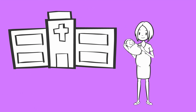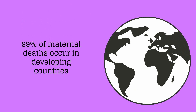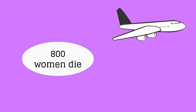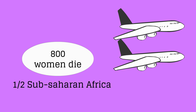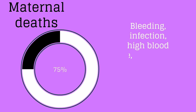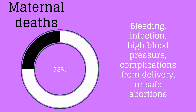Our journey through labor and delivery with Lavora has assumed a high-resource setting. In low-resource settings, there are a multitude of risks, and 99% of maternal deaths occur in developing countries. Every day, 800 women die from preventable causes related to pregnancy and childbirth — the equivalent of two jumbo jets daily. More than half of these deaths occur in sub-Saharan Africa and another one-third in Southeast Asia, with the highest risk for adolescent girls. The major complications accounting for 75% of maternal deaths are bleeding, infection, high blood pressure, complications from delivery, and unsafe abortion.